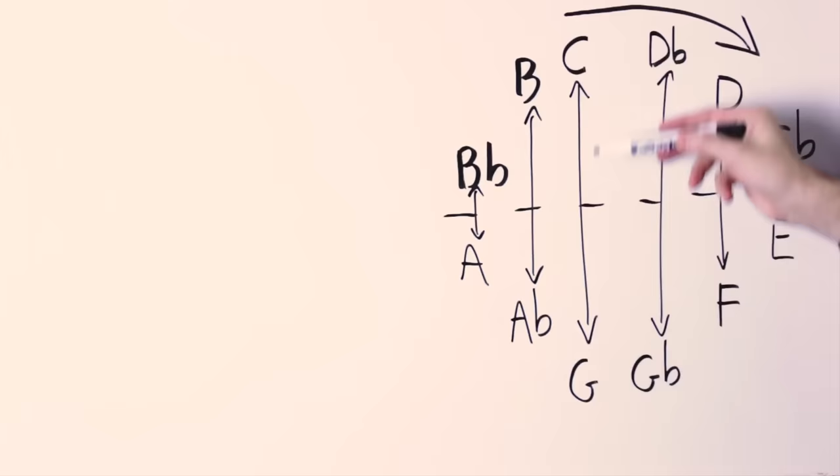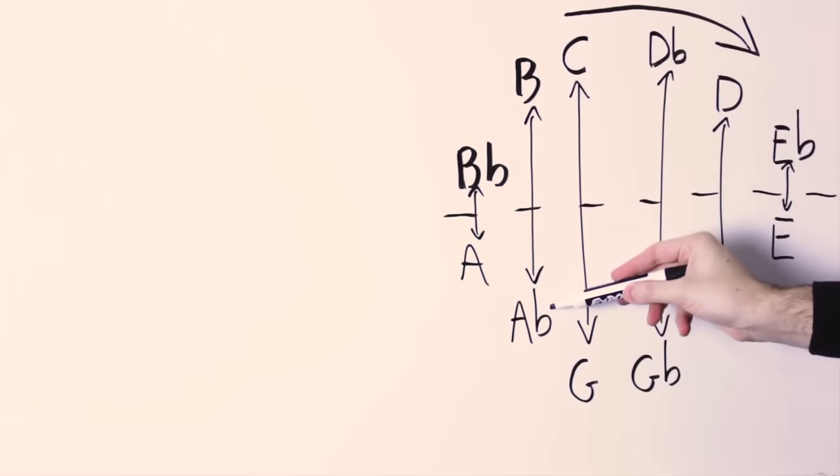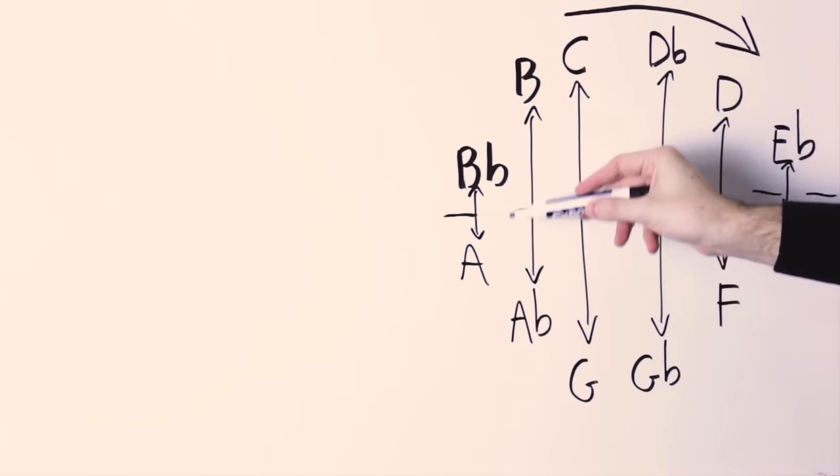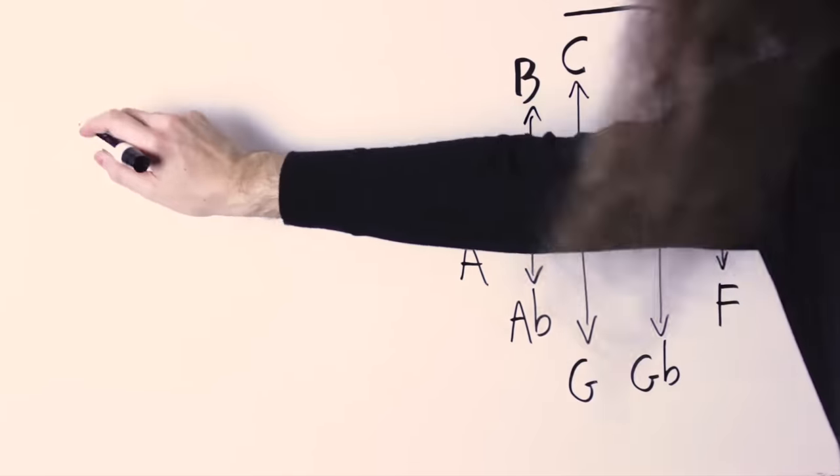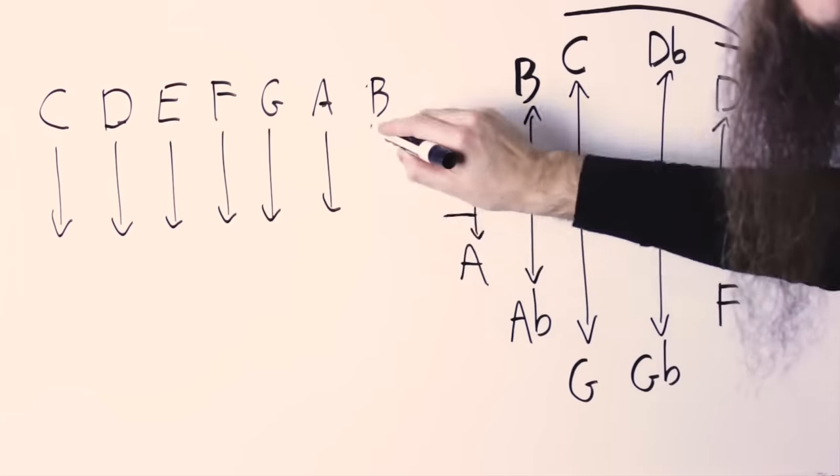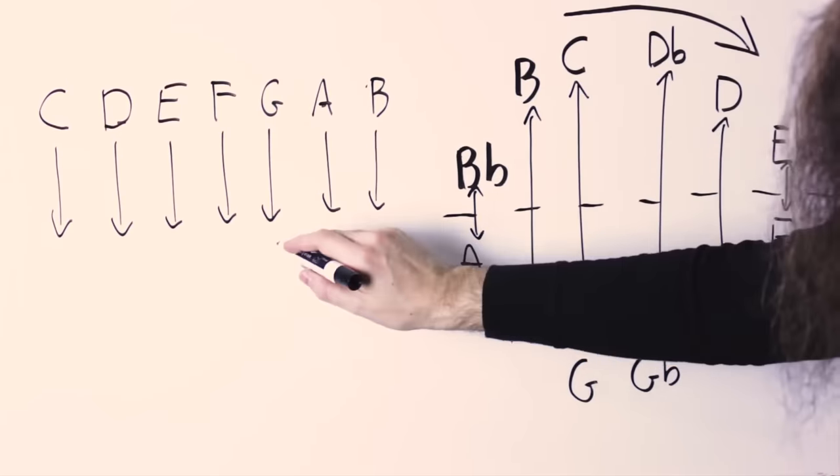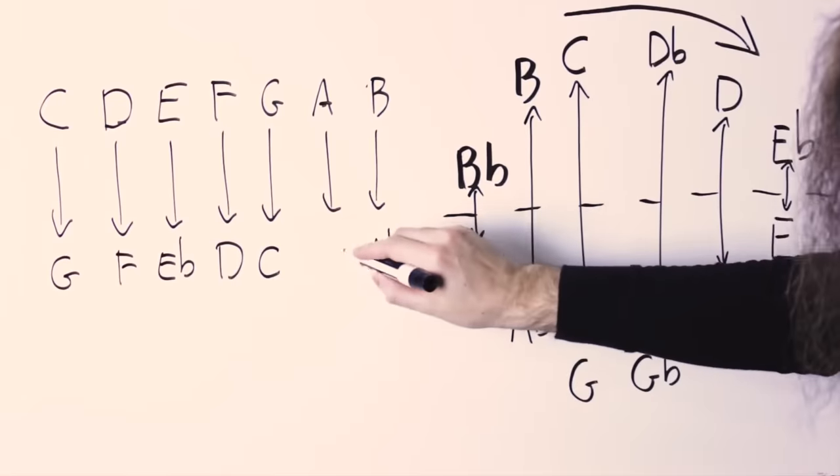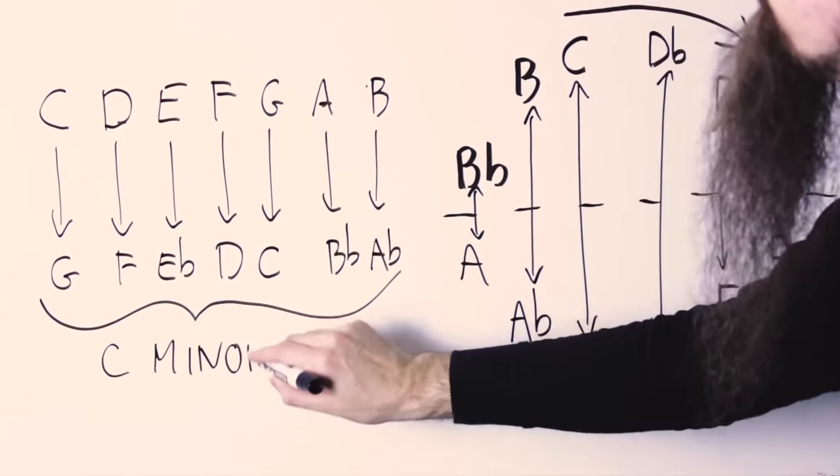The E note becomes an E flat and vice versa, an F note becomes a D note and vice versa, a B note becomes an A flat note and vice versa, and so on and so forth. And what happens is that our major scale, C, D, E, F, G, A, B, gets mapped into a C minor scale: C, D, E flat, F, G, A flat, B flat, C.